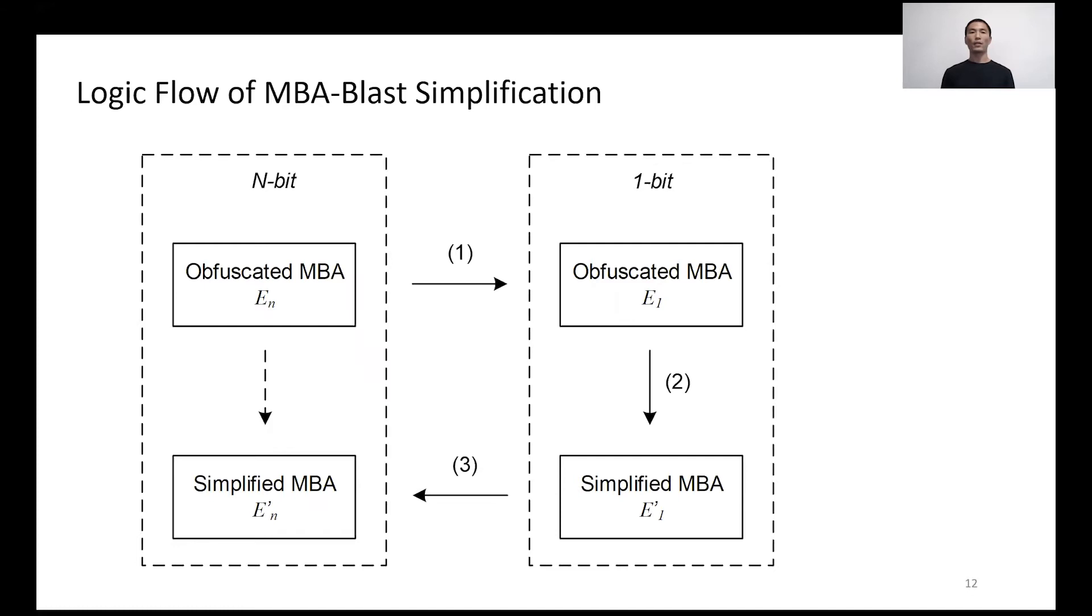So our key idea is to develop MBA simplification rules in one-bit space as step two. Why? Because one-bit variables only have two possible values, zero or one. It largely reduces the searching space when investigating MBA equations.